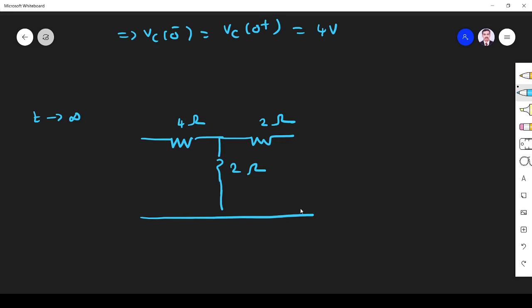Okay fine. Now this is what the circuit will be. Now we know Vc(t) equals V(infinity) plus [V(0) - V(infinity)]e^(-t/RC). What is V(infinity)?